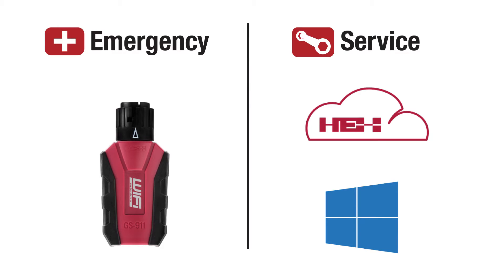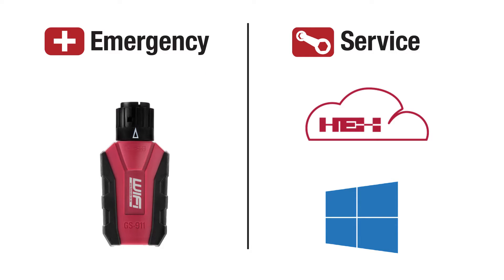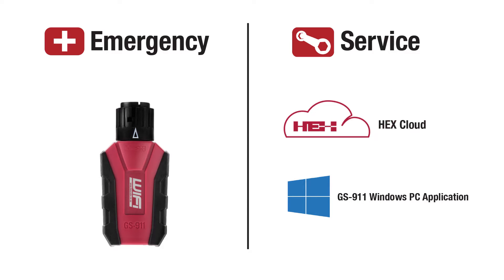Let's take a quick look at what functionality lives where. Emergency functionality lives on the GS911 device itself and is always available in any mode or any setup. Typically you'll be using emergency functionality in the field with your smartphone, even if you do not have internet access. Service functionality resides on the GS911 Windows PC application and the HEX Cloud. If you do not have a Windows PC device, you'll be accessing service functionality via the HEX Cloud — that means Mac, Android, and iOS devices will need to be in infrastructure mode to access service functionality.